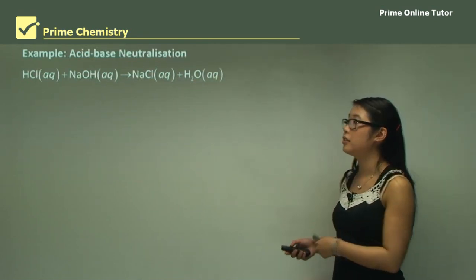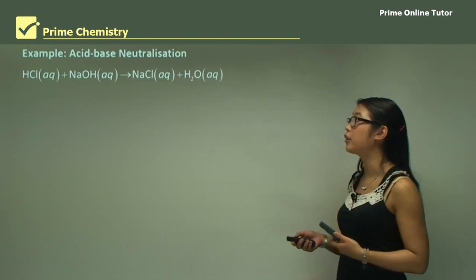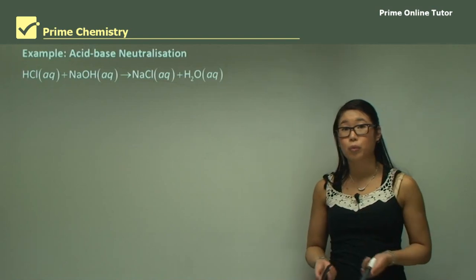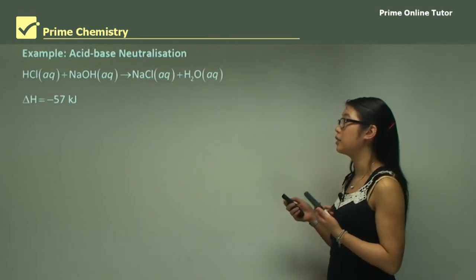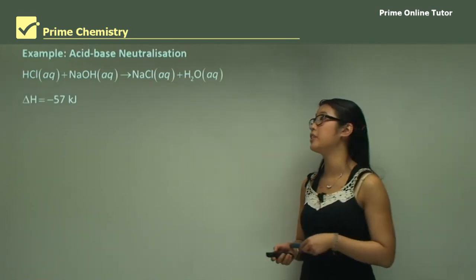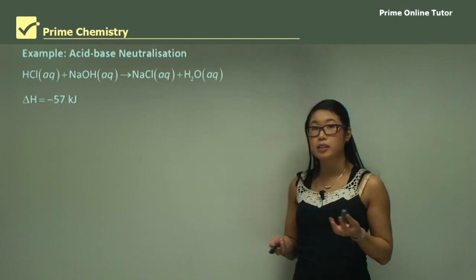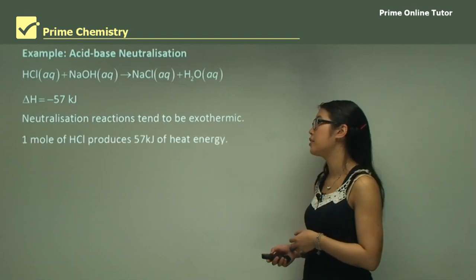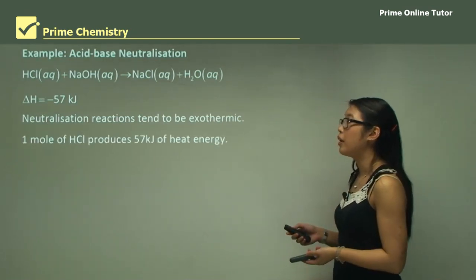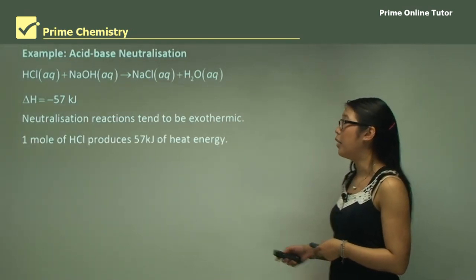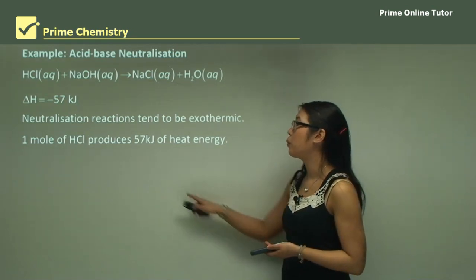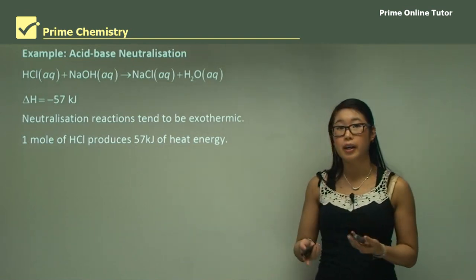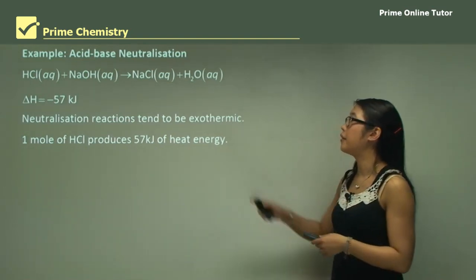For acid-base neutralization, hydrochloric acid with sodium hydroxide forms a salt and water. The delta H value is -57 kilojoules, meaning it's exothermic — neutralizations tend to be exothermic reactions. When we neutralize one mole of hydrogen chloride with sodium hydroxide, we get 57 kilojoules of heat energy released, and these values are all in moles.